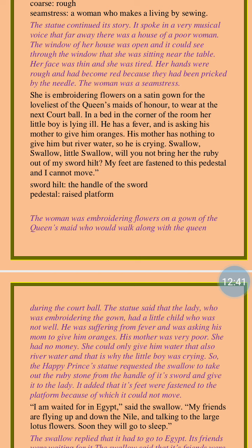'Swallow, swallow, little swallow, will you not bring her the ruby out of my sword hilt? My feet are fastened to this pedestal and I cannot move.' At this, the Happy Prince is requesting the swallow bird to help him because he is just a statue and cannot move anywhere. That is why he is requesting the swallow bird to help him in this matter — to go to that poor lady and give her one ruby from his sword. The statue's sword was decorated with the ruby, and he wanted that ruby to be taken and given to that lady so she could take care of her son.